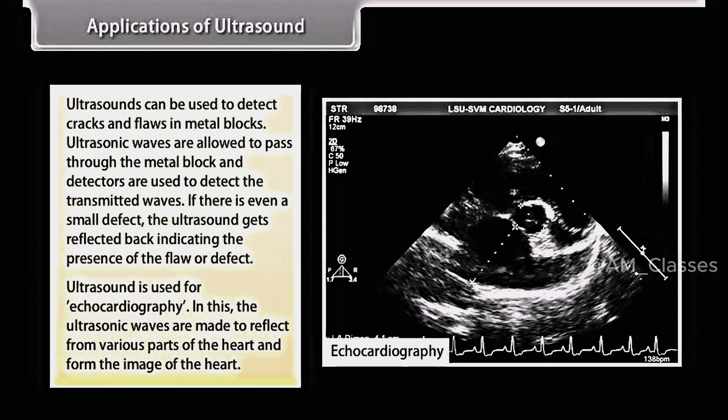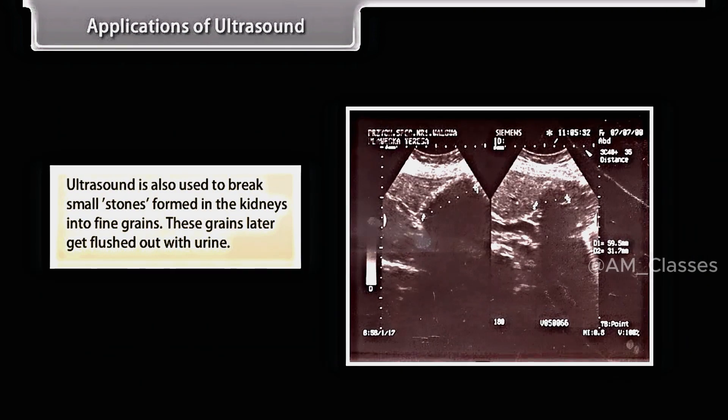Ultrasound is used for echocardiography. In this, the ultrasonic waves are made to reflect from various parts of the heart and form the image of the heart. Ultrasound is also used to break small stones formed in the kidneys into fine grains. These grains later get flushed out with urine.